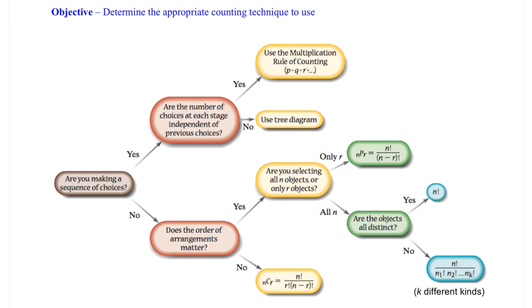That takes us to our next objective: determining the appropriate counting technique to use. We're changing gears here — the question is no longer asking for a probability. Instead, the question will be something along the lines of 'in how many ways can this or that happen.' You see the chart in front of you. The first question we want to ask is: are you making a sequence of choices? If we're making a sequence of choices, that sends us down one major path; if not, it sends us down another.